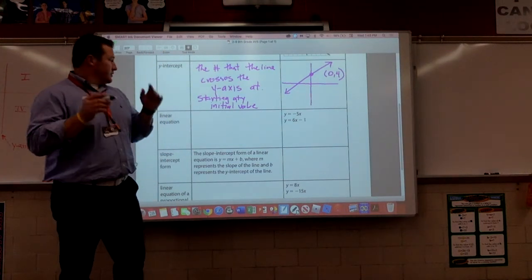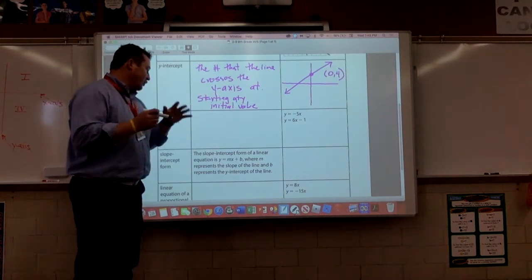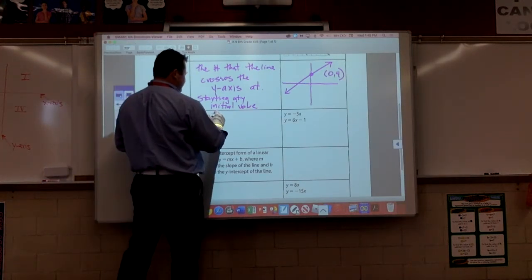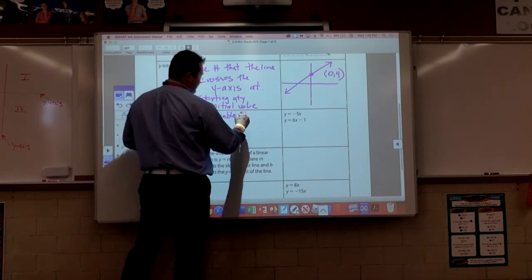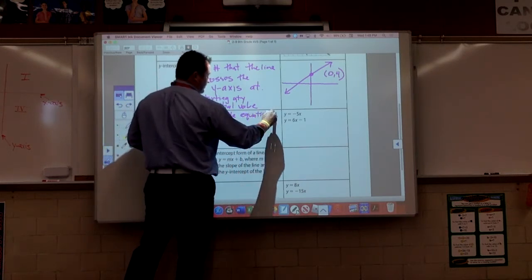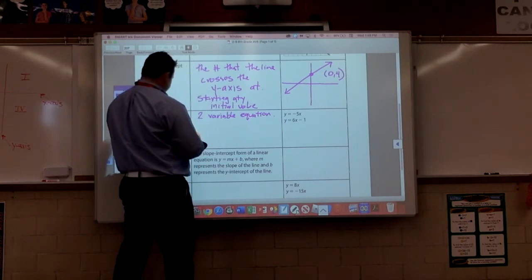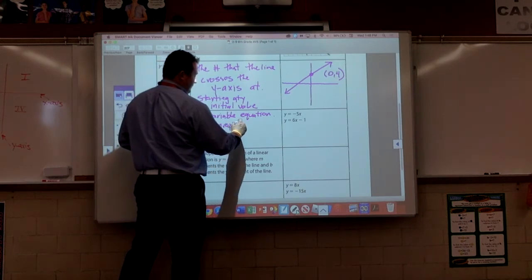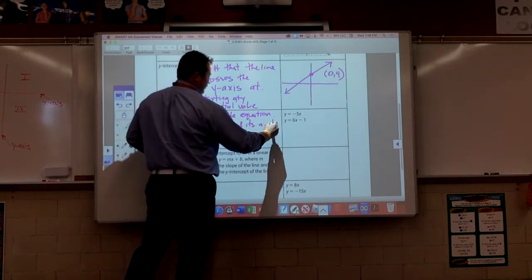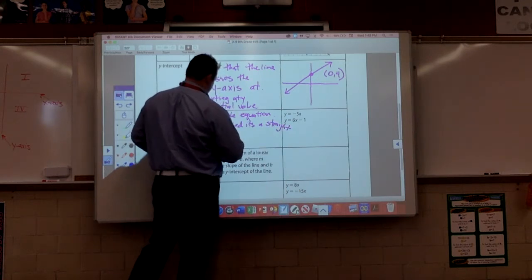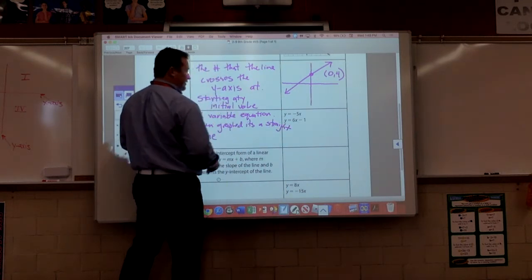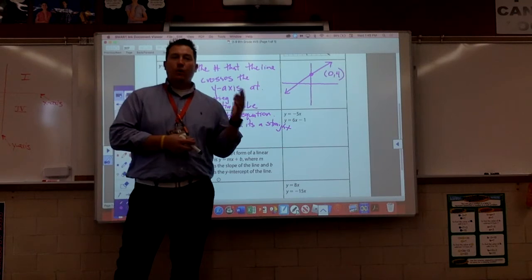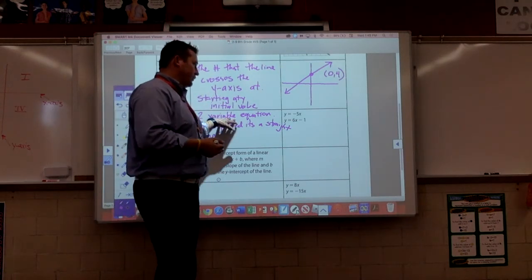Linear equation. So, guys, our linear equation just represents, it is a, I don't really know, this is a two-variable equation. When graphed, it's a straight line. Guys, have we ever seen anything not graphed to a straight line? No. And we won't in eighth grade.